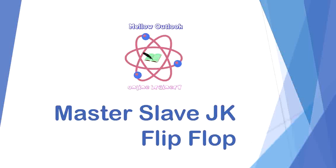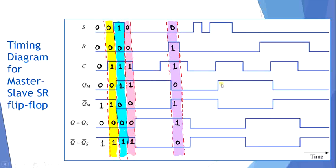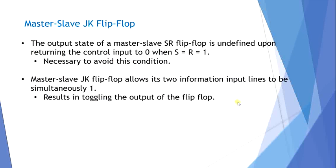Welcome to the tutorial on master-slave JK flip-flop. The output of the master-slave SR flip-flop is undefined upon returning the control input to 0 when S and R are both equal to 1. If you observe the timing diagram, nowhere have I shown that case. That undefined condition is not illustrated, so it is necessary to avoid it.